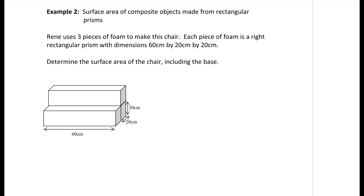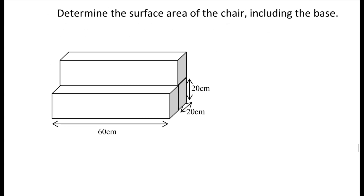The first shapes we're going to be looking at are rectangular prisms. In this question, Reddy uses three pieces of foam to make a chair. Each piece of foam is a right rectangular prism with dimensions of 60 centimeters by 20 centimeters by 20 centimeters. This is helpful because we only really need to calculate for one specific shape and then use that three times.